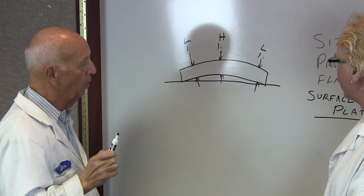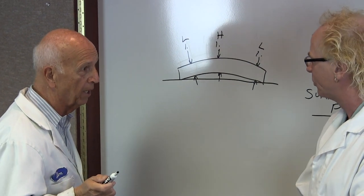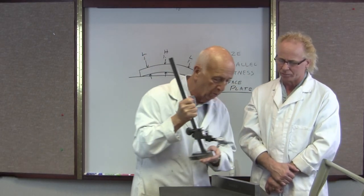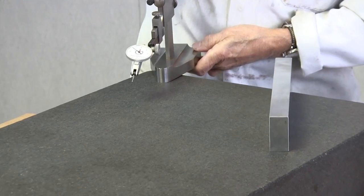So how do we fix that or how do we double check that? Well, we put it on a surface plate, let's say, and we're going to check it, which we're going to do right here.